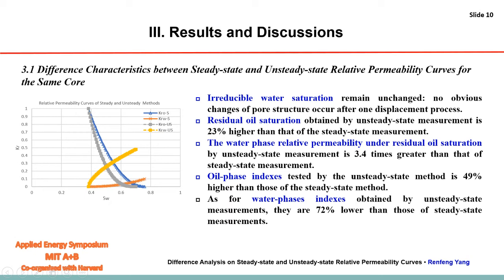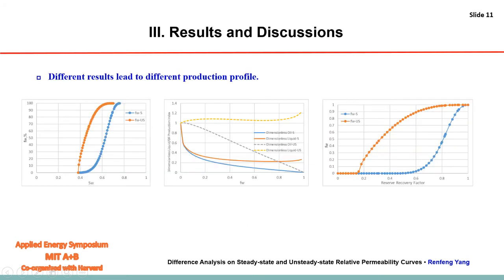The oil phase index tested by the unsteady-state measurements is nearly 50% higher than those obtained by the steady-state method. And the water phase index obtained by unsteady-state measurements is 72% lower than those obtained by steady-state measurements. For the same core, different results were obtained, and these different results will lead to different production profiles — specifically, dimensionless liquid and oil production index. So it is very important to analyze the difference causes and recommend which method should be used.